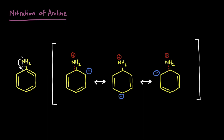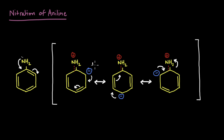Once the lone pair shares its electrons, we'll have a double bond form, and this pi bond will shift to the ortho position, giving a negative charge there. Then the pi bond shifts again giving a negative charge at the next position, and similarly we get a negative charge at the para position. If you follow the negative charge, the electron density is higher at the ortho and para positions, meaning NH2 activates the ring and is an ortho-para directing group.